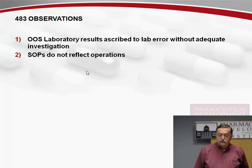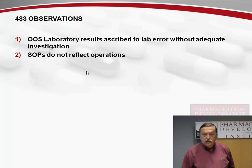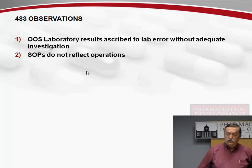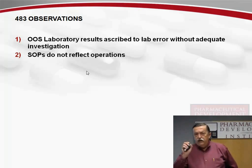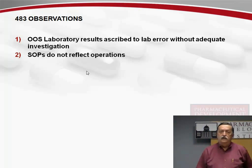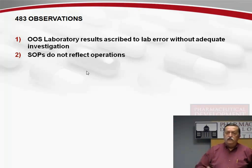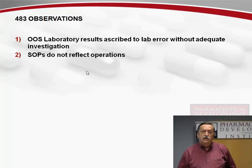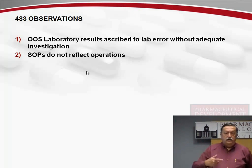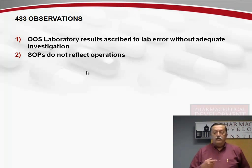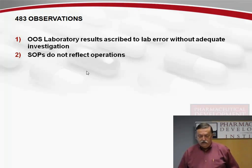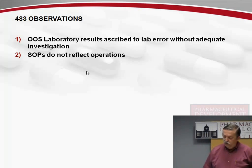SOPs do not reflect operations. Whenever I'm doing an audit, I take a look at the test procedures required by GMP to be in place when the assays and analyses are being performed. If you find any handwritten notes or little yellow sticky notes in them, you know the SOPs do not reflect what's actually being done. The same applies to your manufacturing procedures — if you're constantly having discrepancies because instrument settings or mechanical functions differ, this indicates your SOPs don't accurately reflect operations. This is one of the reasons you want to periodically review your SOPs.